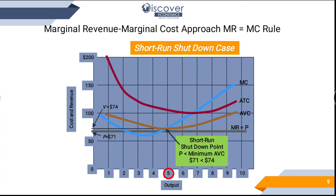If a company is facing only average variable cost loss, it may continue in the hope of recovering losses in the future. But if the company is also facing average fixed cost loss, it is in a very critical condition. Fixed costs include rent of the building, salaries of permanent employees, and utility bills — these must be paid every month, so it is better to shut down.